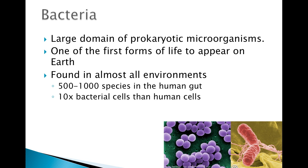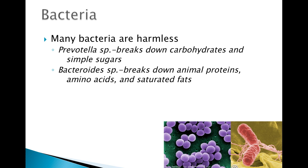Bacteria are in the Kingdom Protista, living cells that are not animals or plants. They are prokaryotic, meaning they do not have membrane-bound organelles. They were some of the first forms of life to appear on Earth and are found literally everywhere. There are nearly 1,000 species of bacteria in the human gut alone, and bacterial cells outnumber human cells in the body 10 to 1.